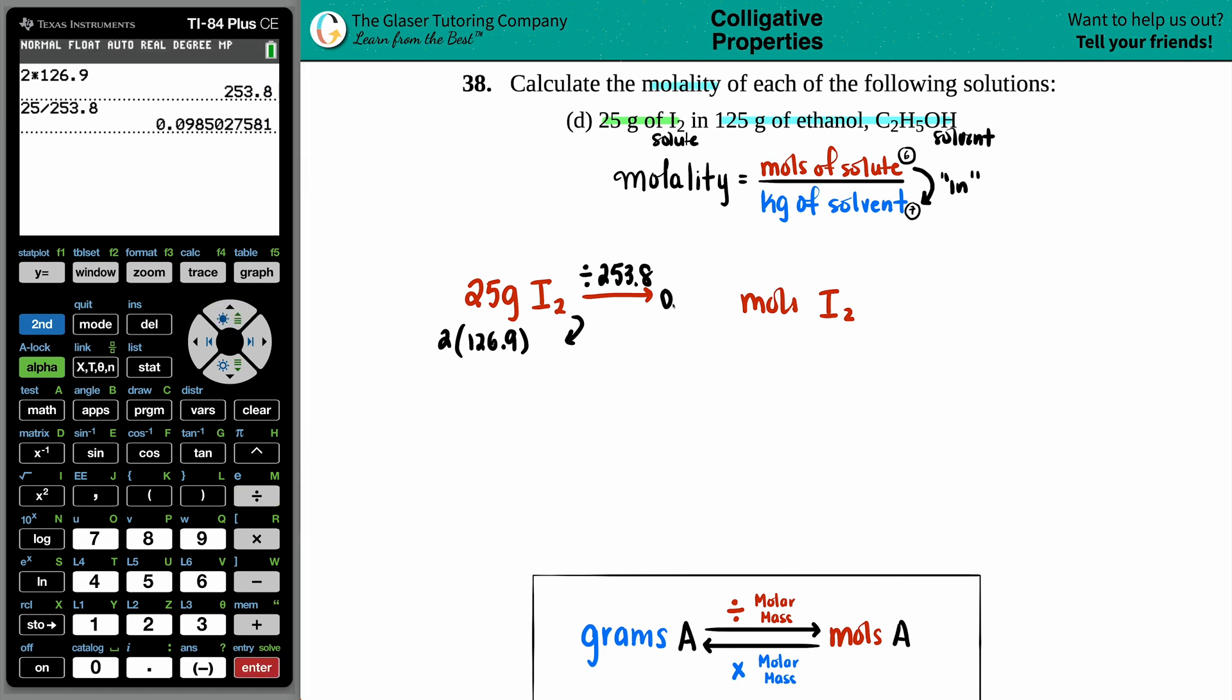So 25 divided by that number. And we get roughly 0.0985. That's good enough. So now we have the moles of the solute.